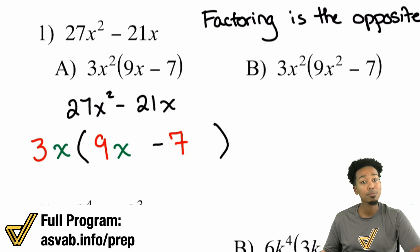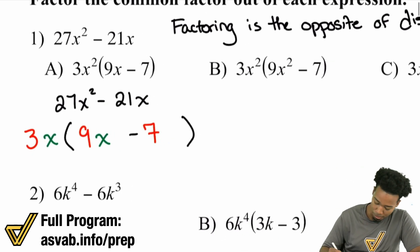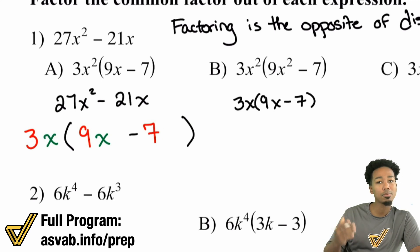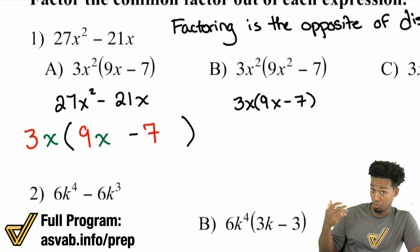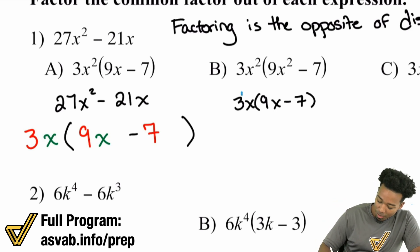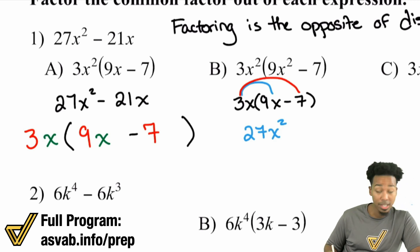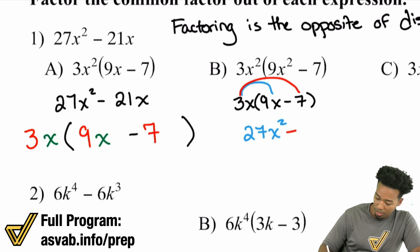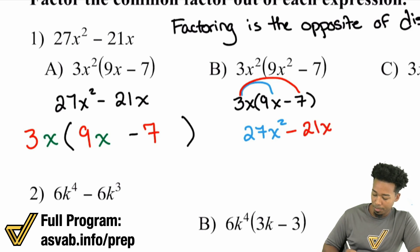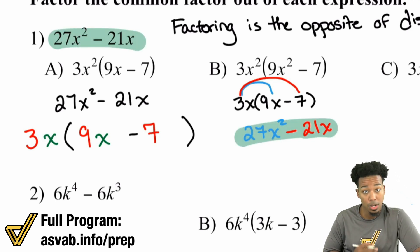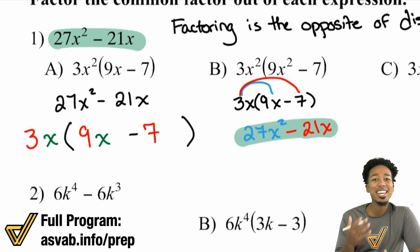Let me show you why that makes sense by going forward. Let me rewrite this over here. 3x, then we have 9x minus 7. Let me show you something magical here. Remember that with distribution, as you should have seen in the previous video, notice how we have the 3x times the 9x. 3 times 9 is 27, x times x is x squared. Then we have 3x times the negative 7 — negative times a positive is a negative. 3 times 7 is 21, and then you bring the x back. Right there — it's the original problem. Working forward and backwards is the same thing here.